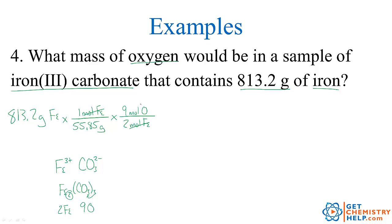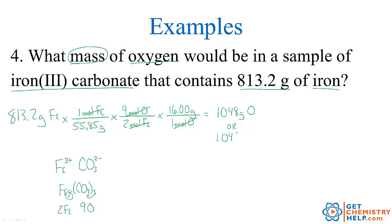Now I'm in moles of oxygen, and I want mass of oxygen, so I use molar mass. Oxygen on the periodic table is 16.00 grams per mole. Moles cancel, leaving grams. This has 4 significant figures, 9 and 2 are both exact, and 16.00 has 4 — so our answer should have 4 significant figures. The answer is 1,048 grams of oxygen, or in scientific notation, 1.048 times 10 to the third grams of oxygen.